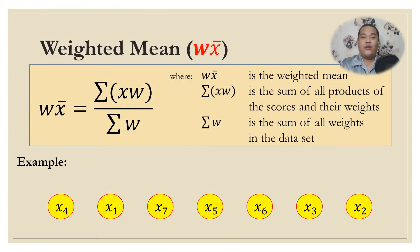Now we have the formula for the weighted mean: wx̄ = Σ(xw) / Σw, where wx̄ is the weighted mean, Σ(xw) is the sum of all products of the scores and their weights, and Σw is the sum of all weights in the data set.